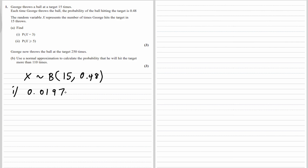The second part: the probability that X is bigger or equal to 5. So the probability that X is bigger or equal to 5 is 1 minus the probability of it being 4 or below. So we're going to work out the probability that it's 4 or below.